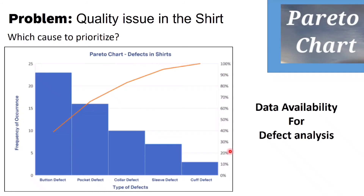Next is Pareto Analysis, commonly called the 80-20 rule. It states that 80% of the problems are due to 20% of the causes. For this method, you need proper data for defect analysis. Here the problem is quality issues in a shirt with many causes. Looking at the frequency of occurrence, most complaints come from button defects and pocket defects. This method helps you prioritize what needs to be addressed first, instead of wasting time on less important ones. It can also be used when you have multiple root causes for a major problem.